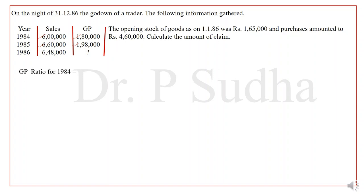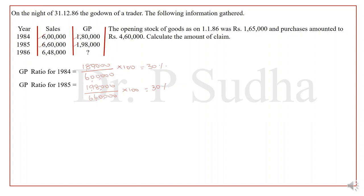The formula for GP ratio is gross profit ÷ sales × 100. For 1984: gross profit is 1,80,000 and sales is 6,00,000, giving GP ratio = 30%. For 1985: gross profit is 1,98,000 and sales is 6,60,000, again giving GP ratio = 30%. So we know the GP ratio is 30%. Now we calculate the memorandum trading account.